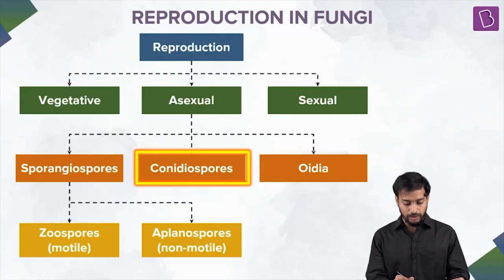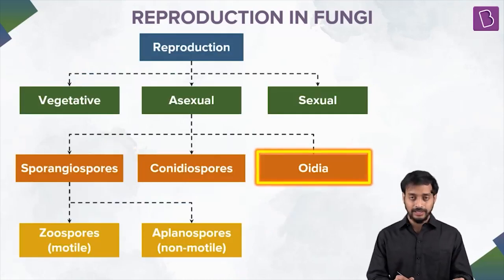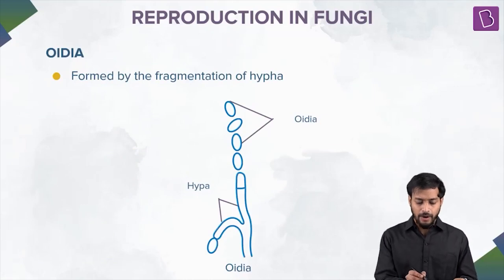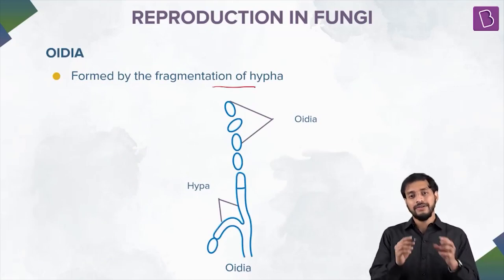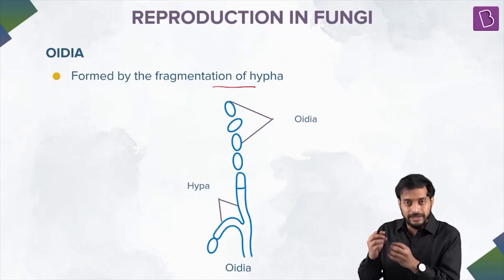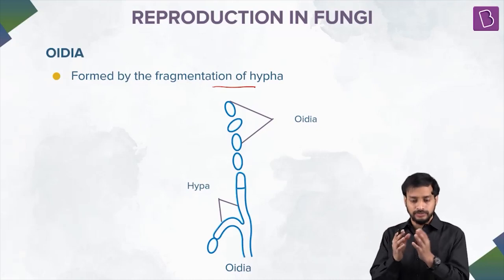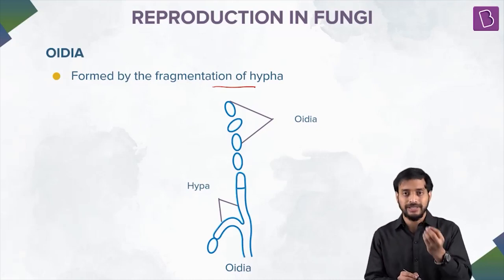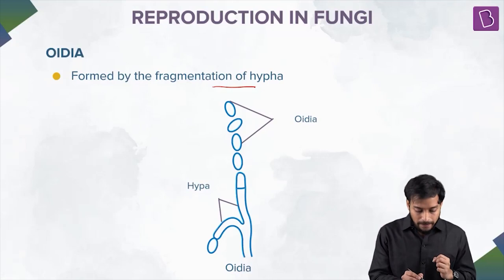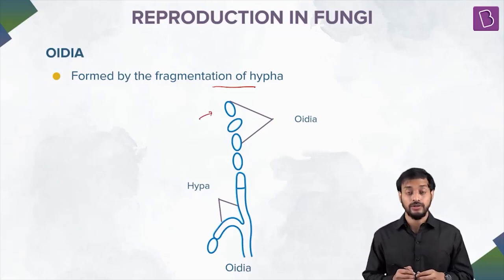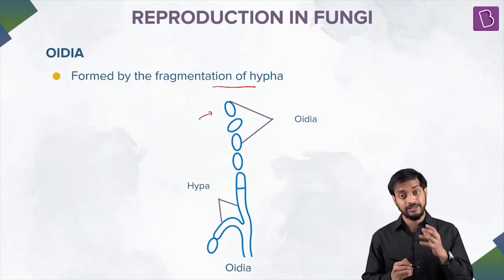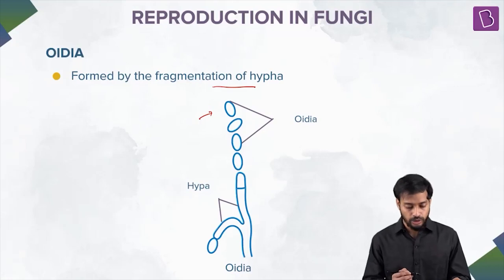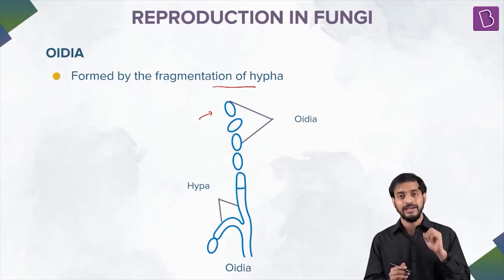Next, oidia — this is a simple one. Oidia are formed by the fragmentation of hyphae. At times hyphae get fragmented, possibly because of physical forces or other reasons. These fragments are called oidia, and they can later grow into new organisms.